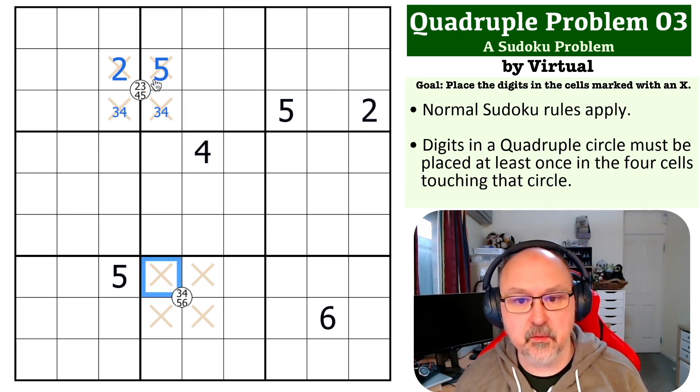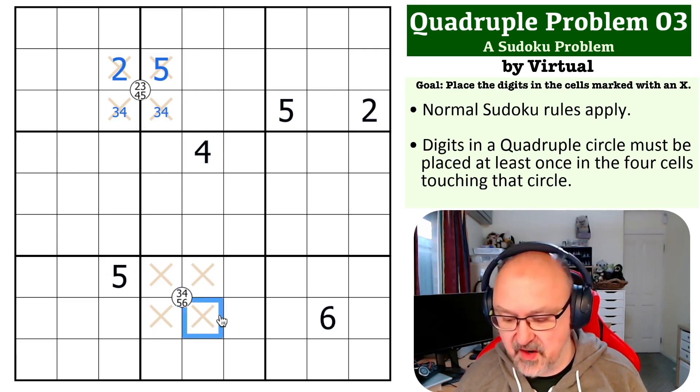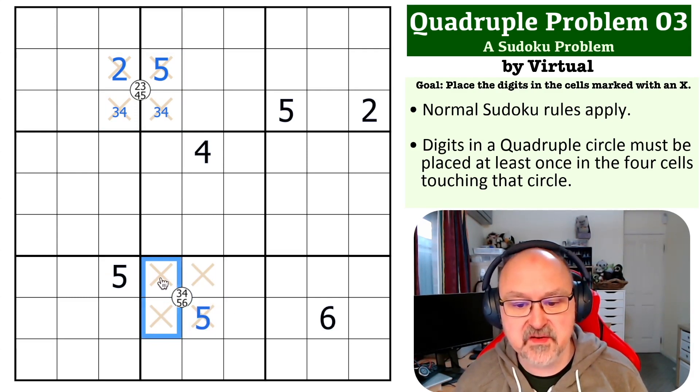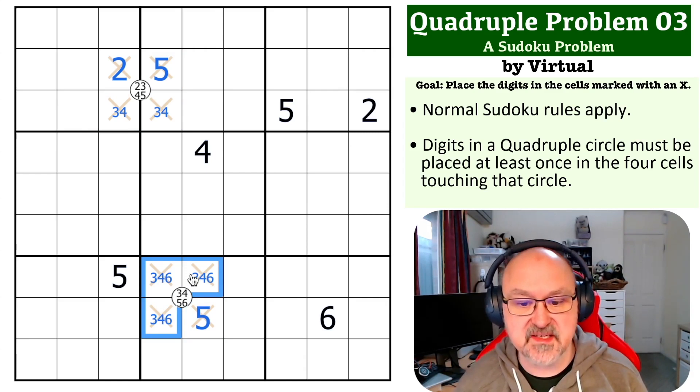However, down here, this 5 means we can't put 5 here, and we can't put 5 here because of this 5. So this becomes a 5. So these become 3, 4, and 6.